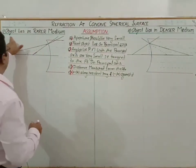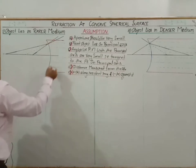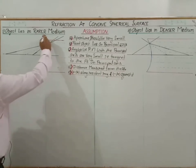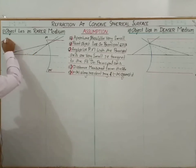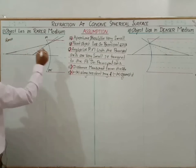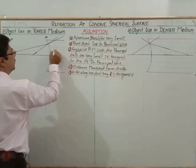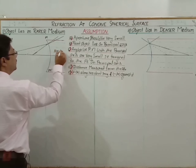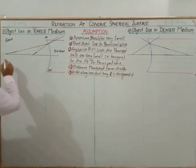Keeping these assumptions in mind, we now look at refraction at the concave surface. First case: object lies in the rarer medium. The object is in the rarer medium, and this is the concave surface of aperture MM'. Here the rarer medium is on one side and the denser medium is on the other side.